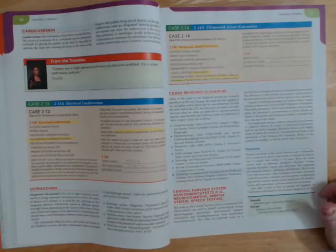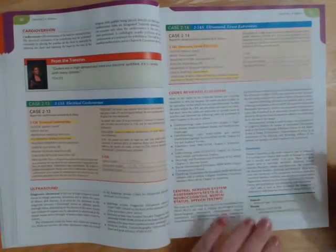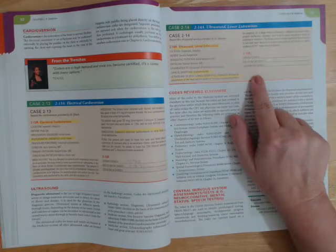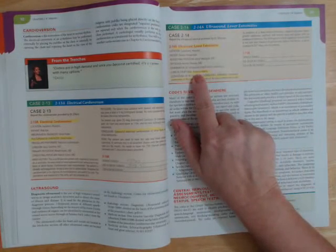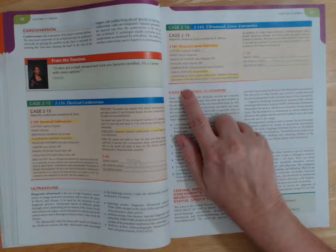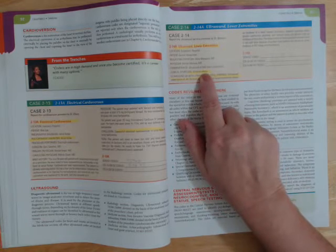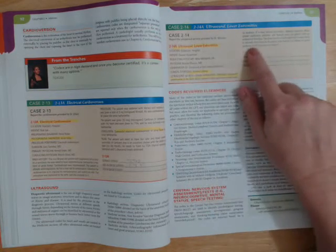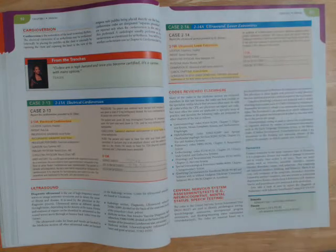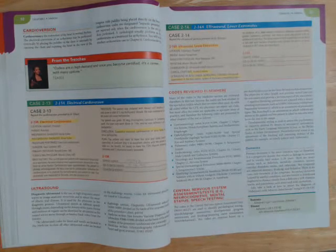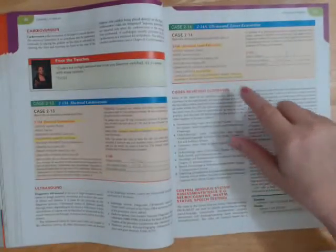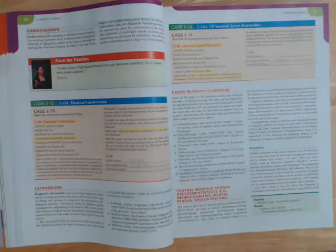Diagnostic ultrasound: This is an ultrasound of the lower extremities, it's bilateral. You're going to have to default back to the bilateral edema because there's no evidence of DVT, there's no definitive diagnosis of anything else, so they just have bilateral edema.